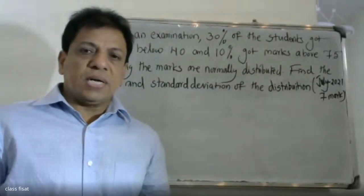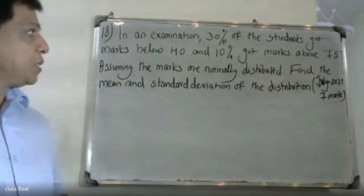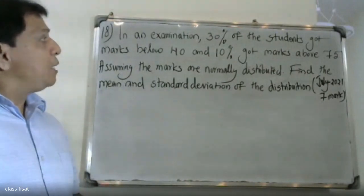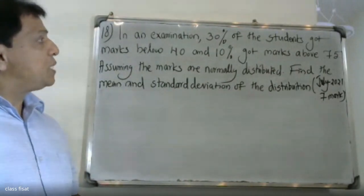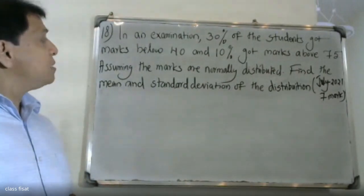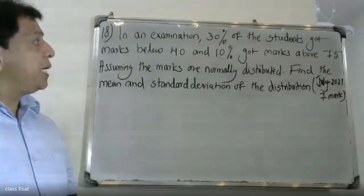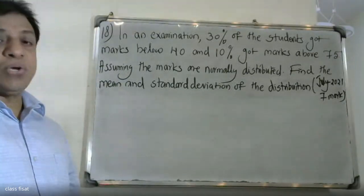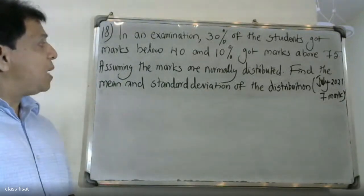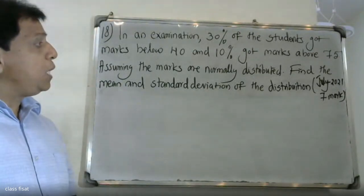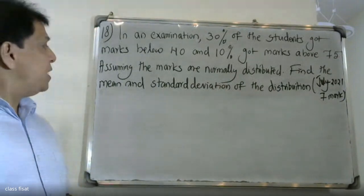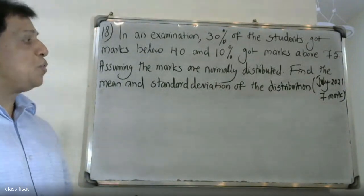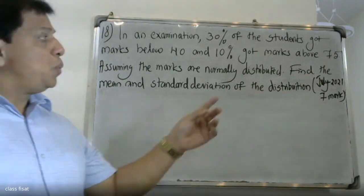Good morning students. In an examination, 30% of students got marks below 40 and 10% got marks above 75. Clearly the marks are normally distributed. Find the mean and the standard deviation of the distribution.